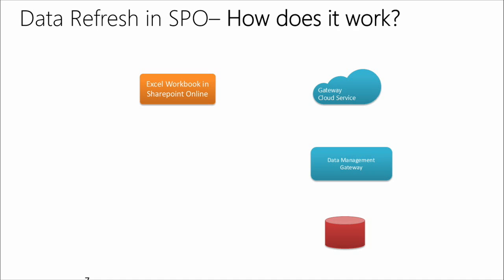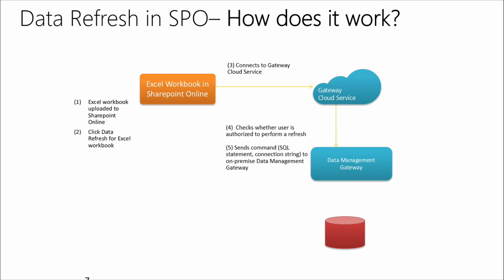Let's quickly look at how scheduled refresh works. You start with an Excel workbook, upload it online, and click refresh data. That connects you to the data gateway cloud service. The gateway has two components: one in the cloud as part of Power BI, and a client that sits on-premise. Between the cloud and on-premise components, we check that you have the right credentials and are authorized. Once that's completed, we send a query to the back-end SQL Server, retrieve the data, and efficiently transfer it back through our hybrid connectivity service through the gateway.